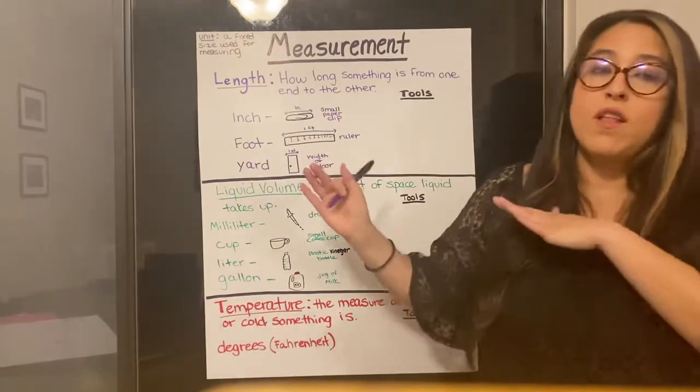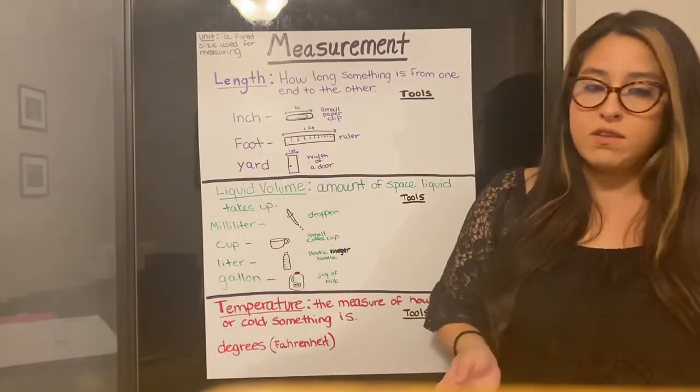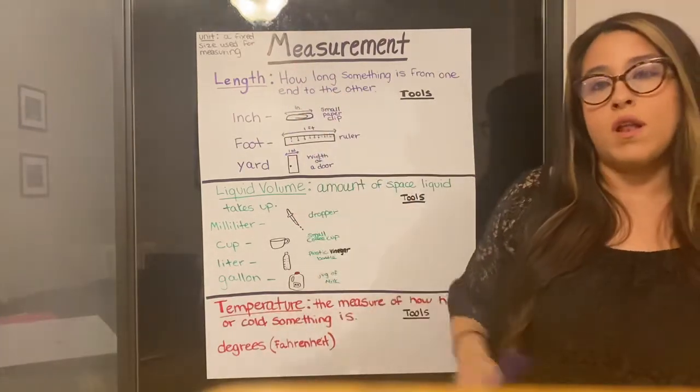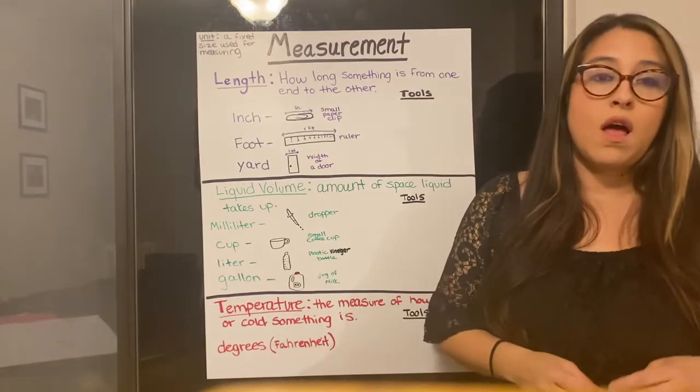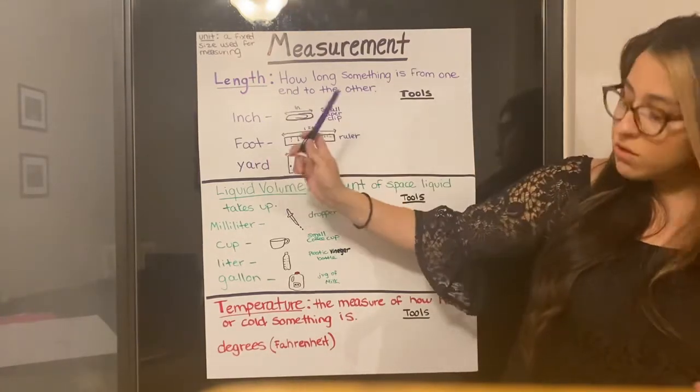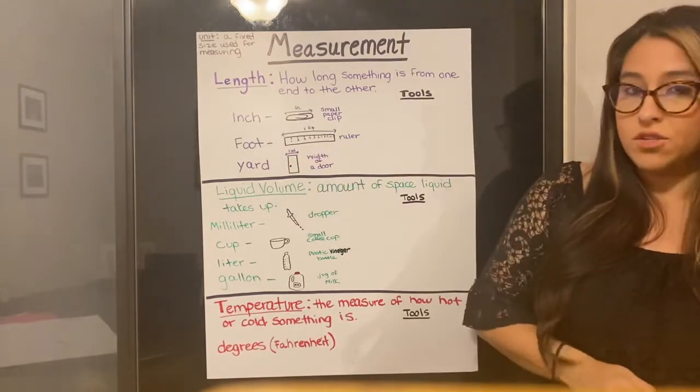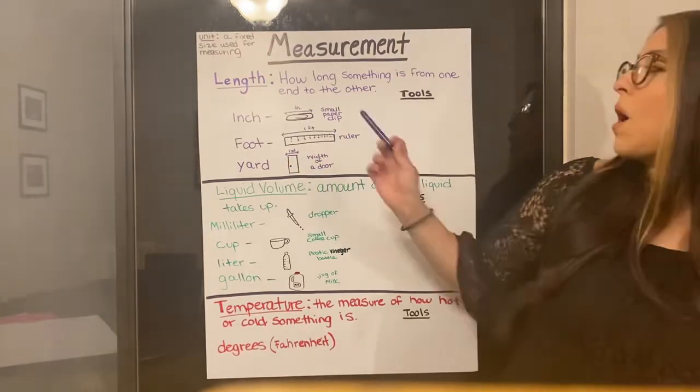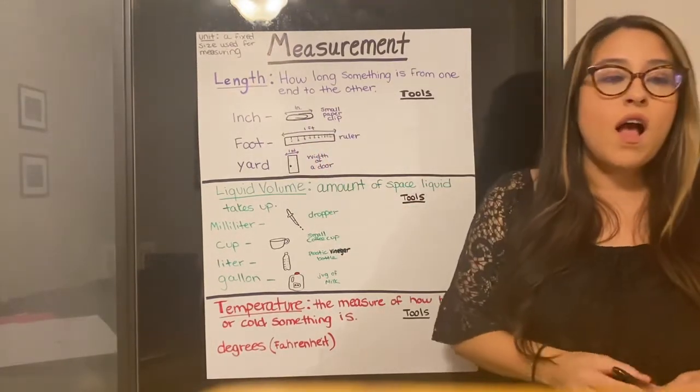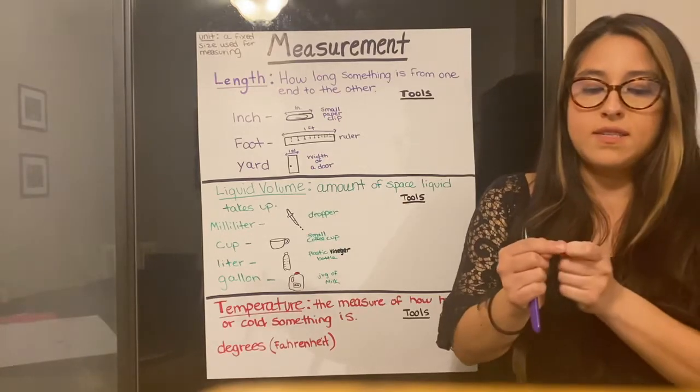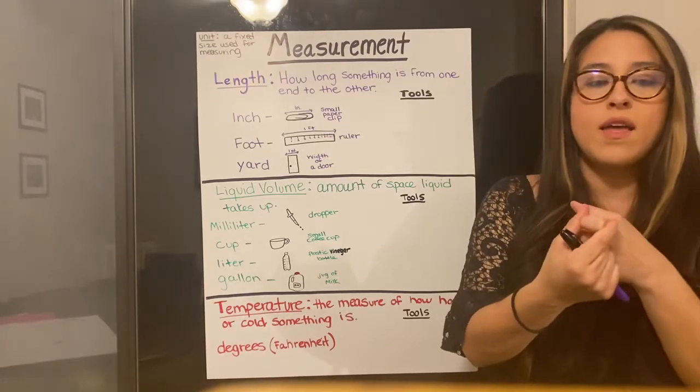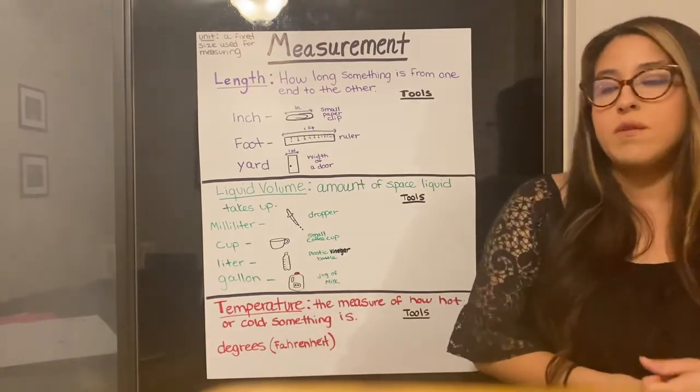Now I'll be honest, those are not the only units of measurement of length in the world, but today we're going to focus on the main ones that you guys are going to be using a lot and seeing a lot this year. So our smallest unit of measurement for length is an inch. An inch is about the size of a paper clip. Another little trick: an inch is about the size from this knuckle to this knuckle, so you can use that as an estimation.